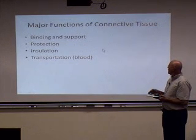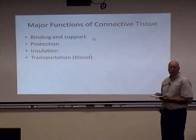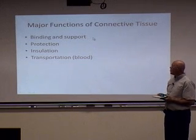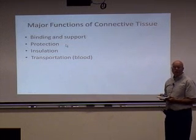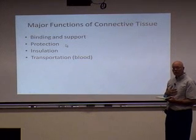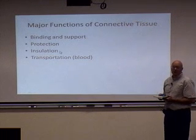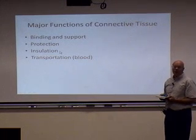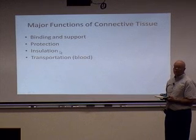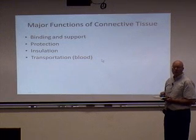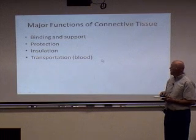Key functions of connective tissue: binding and support — think of the bones, think of tendons and ligaments. Connective tissue also has a protective function; certainly your rib cage surrounds critical internal organs such as your heart and lungs. Fat tissue, adipose tissue, is a connective tissue with an insulative function. And finally, transportation — red blood cells are involved in transporting oxygen and CO2 in and out of the body.